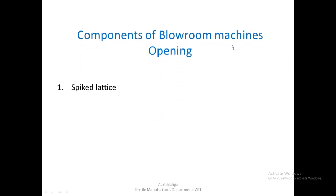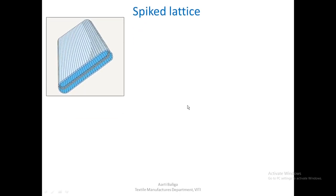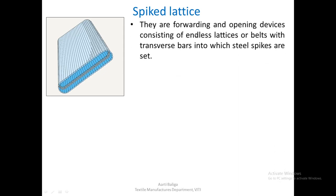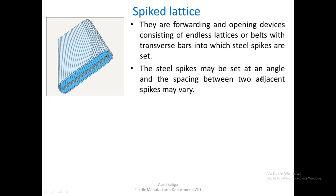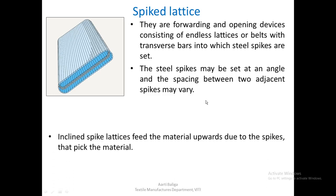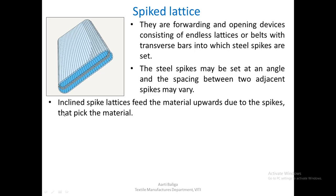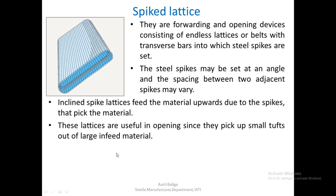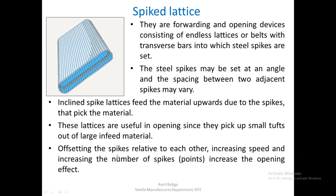The components of blow room machines seen during opening include the spike lattice and gripping devices or rollers with spikes or teeth. The spiked lattice is a belt-like system on which there are steel spikes that rotate in one direction — they are forwarding and opening devices consisting of endless lattices or belts with transverse bars into which steel spikes are set. The steel spikes may be set at an angle and the spacing between two adjacent spikes may vary. Inclined spike lattices feed material upwards, picking up small tufts out of a large infeed. Offsetting the spikes, increasing speed, or increasing the number of spikes increases the opening effect, which is very gentle.